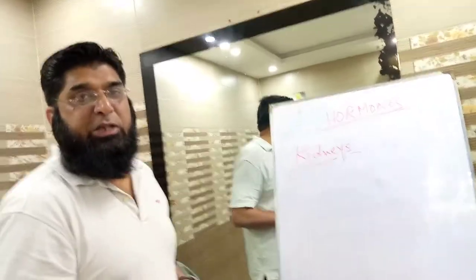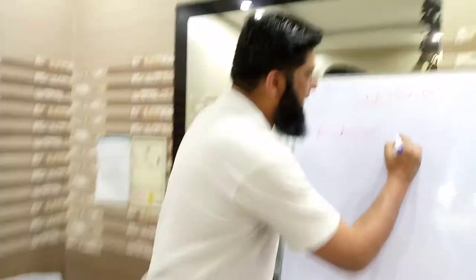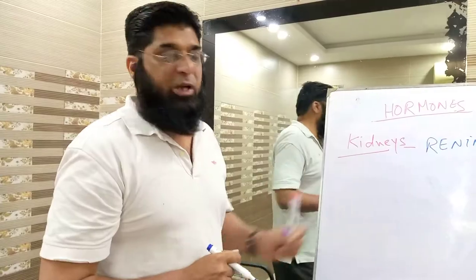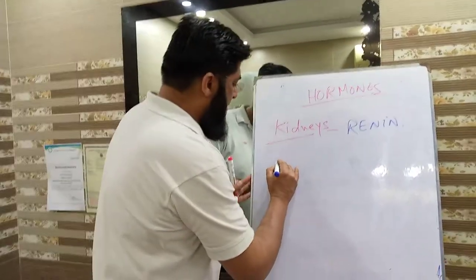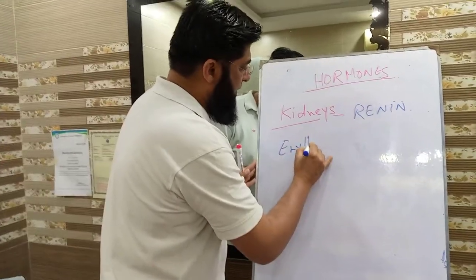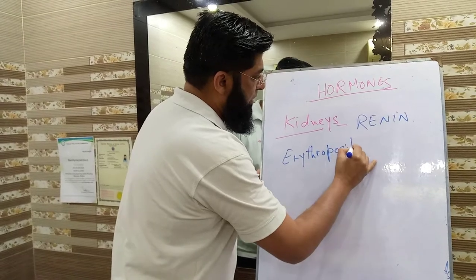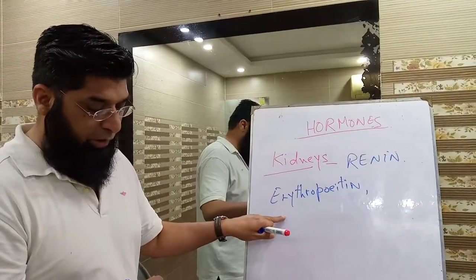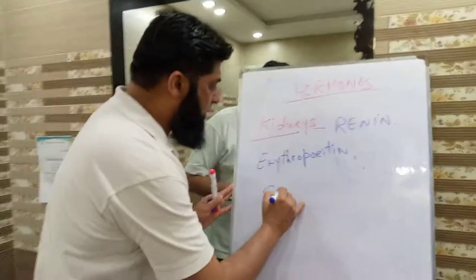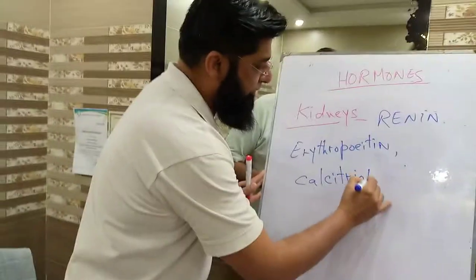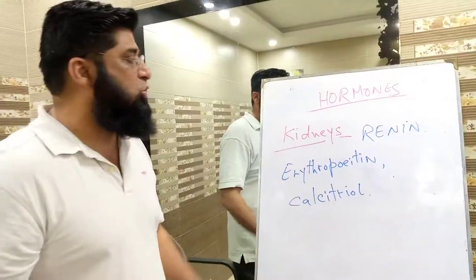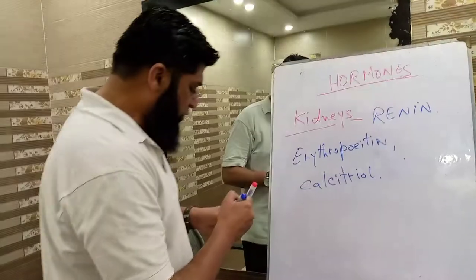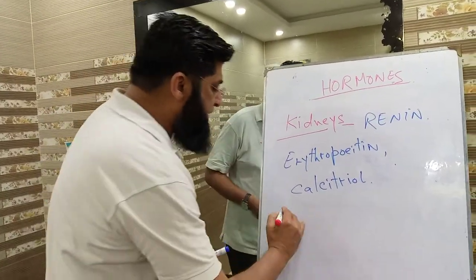Now we move towards the Kidneys. The kidneys produce the most important hormones: Renin — the main hormone involved in blood pressure control — Erythropoietin, and Calcitriol. These are the important hormones produced by the kidneys.